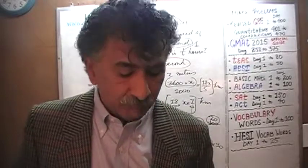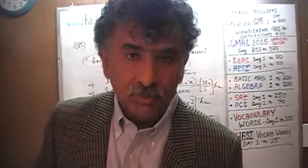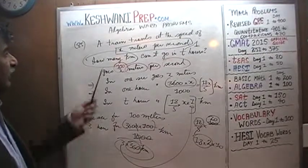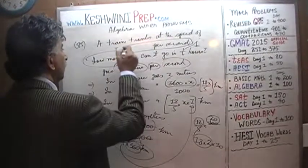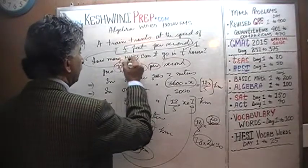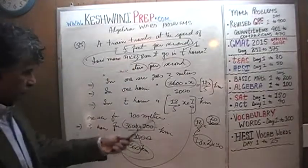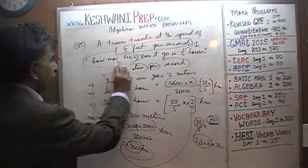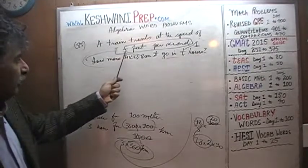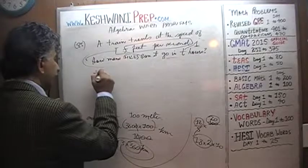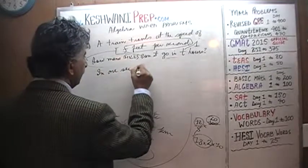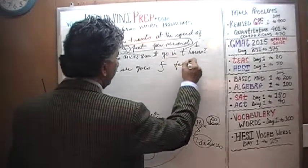Now we are going to do the exact same problem, but converting speed from feet per second into miles per hour — the English system. We have a train traveling at x feet per second. How many miles can it go in t hours? Same process, but with different units. We start with: in one second it goes x feet.